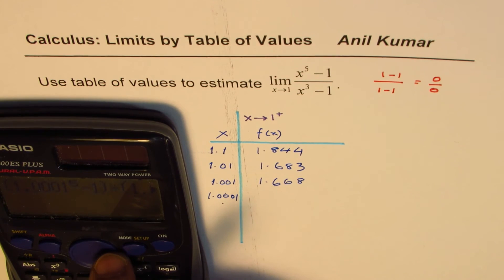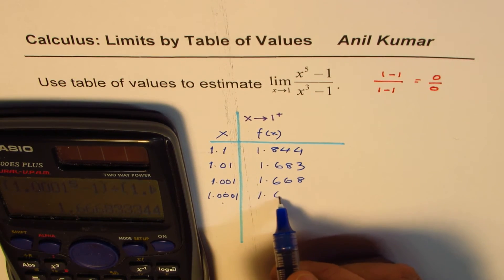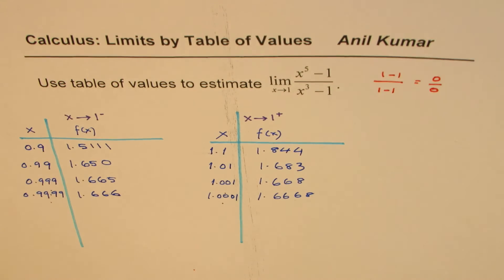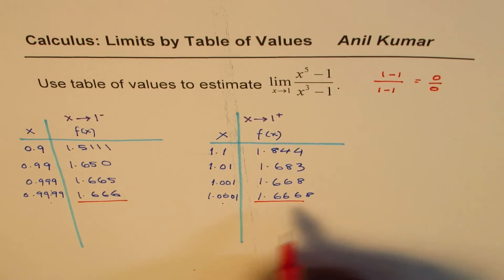So 3 zeros and then followed by a 1. So that gives us 1.6668. Do you see that part?